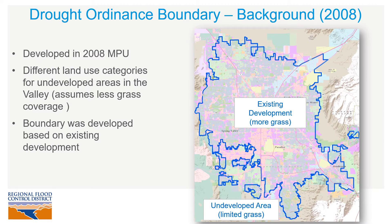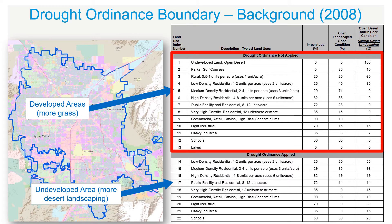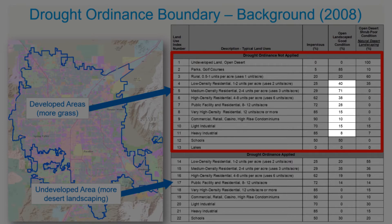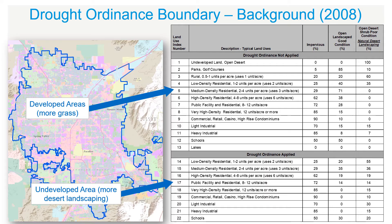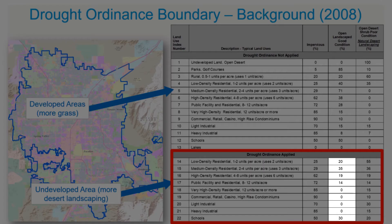This boundary basically allowed us to have different categories of land use inside and outside of the boundary. Inside the boundary in the developed areas, the top 13 categories shown in the table were used, and these assume a higher percentage of grass. Outside of the boundary, the drought ordinance requirements apply, and those categories on the bottom were used, which use a lower percentage of grass coverage and more desert landscaping.